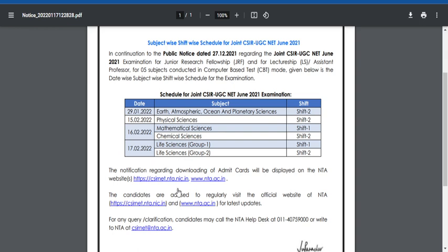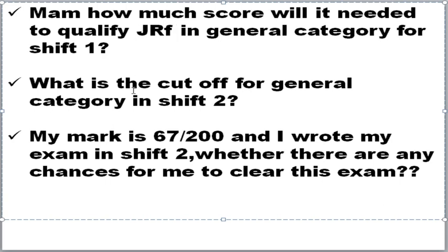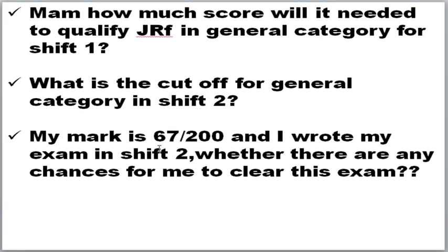Life sciences students are really getting worried about the result analysis, so I thought to make this video so many students will benefit. Students are asking questions like: how much score is needed to qualify JRF in general category for shift one? What is the cutoff for general category in shift two? My mark is 67 out of 200 — I calculated based on the response sheet and provisional answer key, and I wrote my exam in shift two. Are there any chances for me to clear this examination?